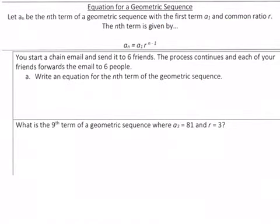So I want you guys to go ahead and start trying this next word problem. It's asking about an email chain that you're sending to 6 friends and then they send it to more. They send it to 6 friends themselves. So you're going to write an equation for that. And then you're going to find out what the 9th term of a geometric sequence is where you have a couple things given to you. So go ahead and try these on your own and check back for your answers.